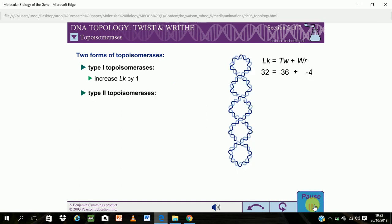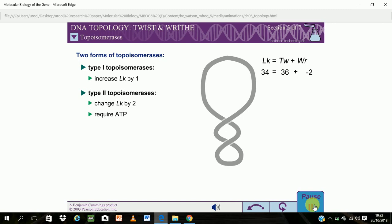Type 2 topoisomerases change linking numbers in steps of 2. Type 2 topoisomerases require energy from ATP hydrolysis for their action. By changing the handedness of turns, type 2 topoisomerases change the topology of DNA molecules.